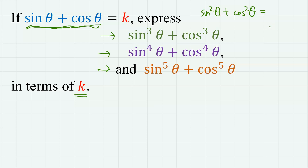If you wonder where sine square theta plus cosine square theta is — sine square theta plus cosine square theta is simply 1, so we only care about higher powers. All right, let's get on to it.